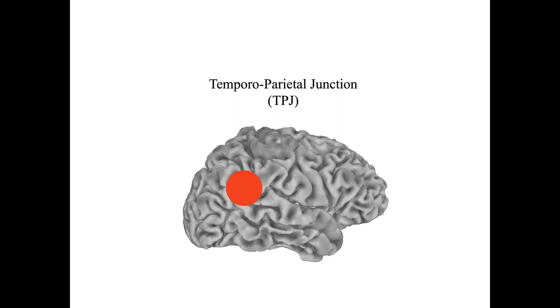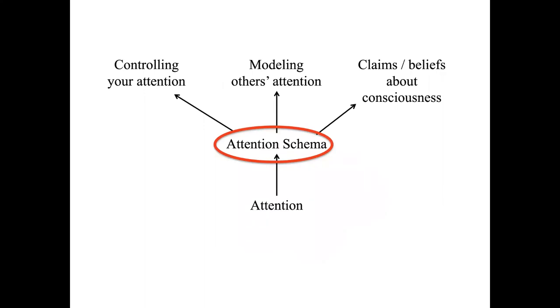All of these properties are emphasized in the right TPJ, but to some extent can also be found in the left. These overlapping findings are consistent with the TPJ playing a role in constructing a predictive attention schema, which is then involved in the control of attention, in attributing attentive mind states to others, and in a person's claims about his or her own subjective consciousness.